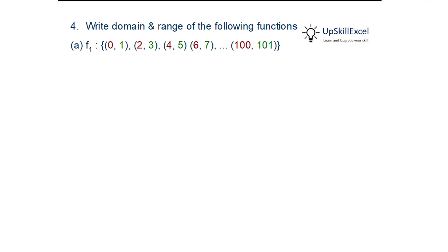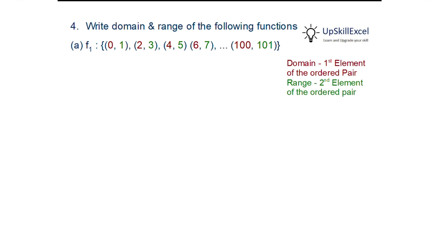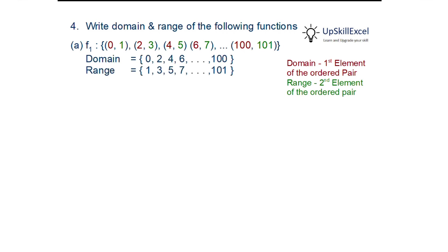Write the domain and range of the following functions. For any ordered pair, the domain is the first element and the range is the second element. In this example, the red-colored first elements are the domain and the green second elements are the range. So the domain is {0, 2, 4, 6} and the range is {1, 3, 5, 7, ..., 101}.